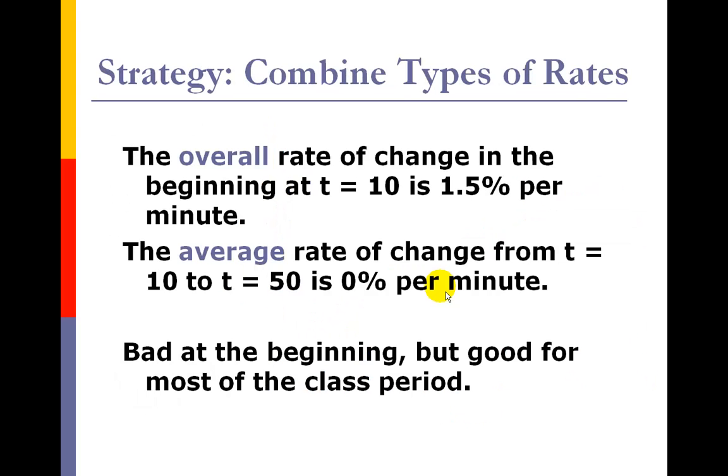Another argument is that the professor could use a combination of rates. The professor could say, you know, over the first 10 minutes when I have no control over the students because they're coming in sleepy and stuff like that and they're just falling asleep because that's where they're at, the overall rate of change is 1.5. But if you go from time 10 to time 50 when actually I have influence over the students, I have an impact over them, you'll see that the average rate of change of students falling asleep is zero. So it's bad at the beginning, not my control, they're coming in that way, but for the rest of the class period, it's good. You might be thinking, wait a minute, what? Where did I get this zero percent rate per minute, this rate of zero?